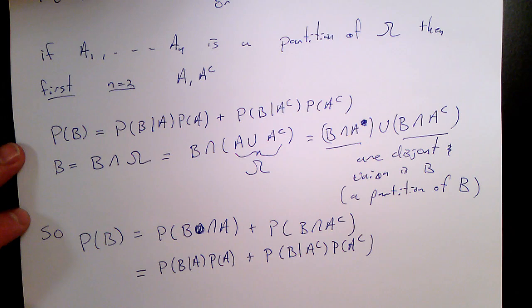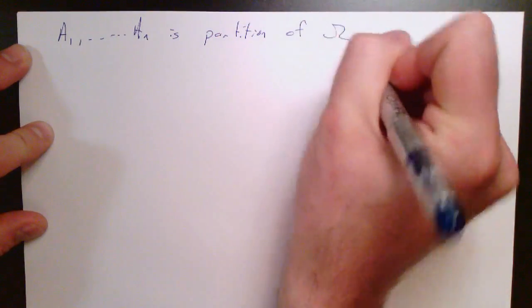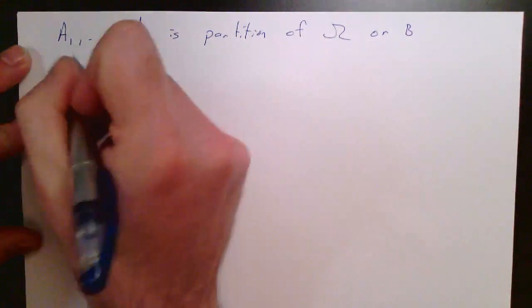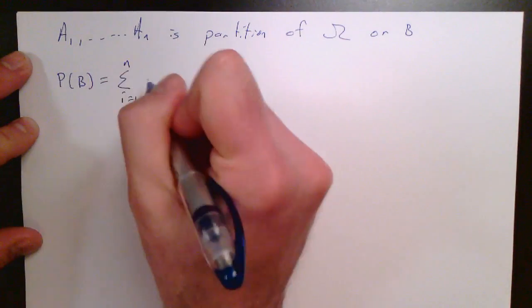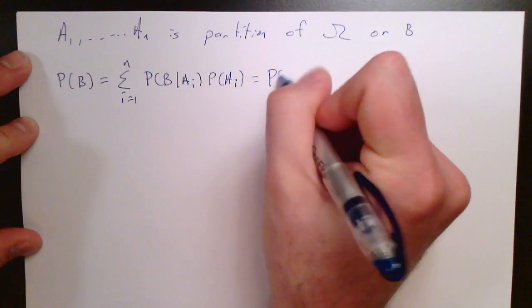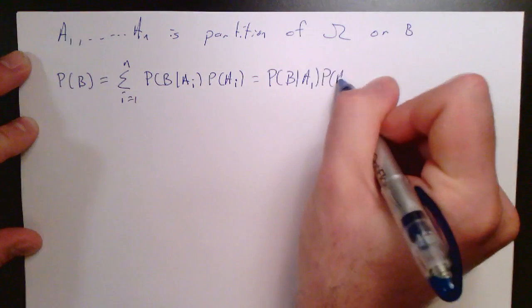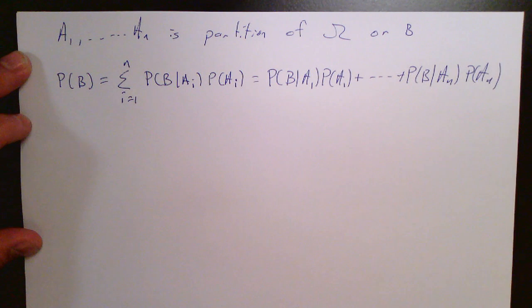Now let's see how the more general formula can be written. In the general case where we have n sets A1 to An that form a partition of omega — or for that matter just a partition of the event B — we can write the probability of B as a sum over the probability of B given Ai happened, times the probability of Ai. That summation is just: P(B|A1)·P(A1) plus P(B|A2)·P(A2), all the way down to P(B|An)·P(An).